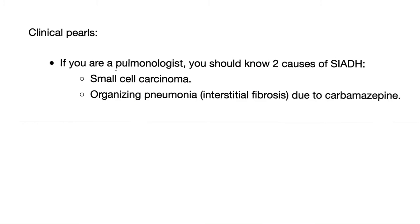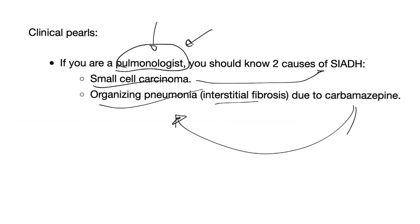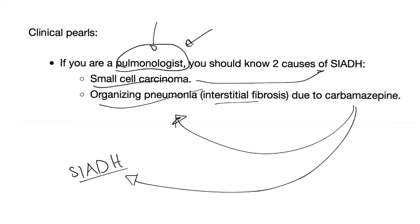Clinical pearls for the pulmonologist: you should know two causes of SIADH related to your field of study. Number one, small cell lung cancer leading to this horrible paraneoplastic syndrome. Number two, organizing pneumonia or interstitial fibrosis if it's due to carbamazepine. The same carbamazepine will lead to SIADH — syndrome of inappropriate ADH — where there is excess ADH, you reabsorb free water until your cells swell, including your brain cells, causing neurological symptoms.